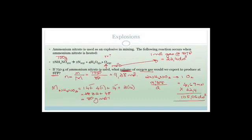So the final answer is, if we use 750 grams of ammonium nitrate, what is the volume of oxygen that we produce? We produce 105.06 decimetres cubed, which is huge. It is a huge amount.